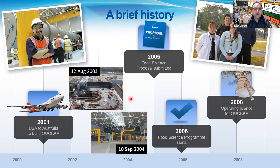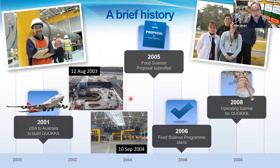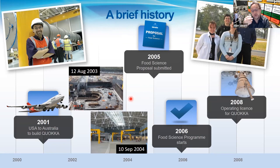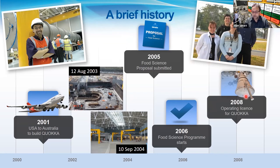One idea was whether we could develop a new community of researchers who hadn't used neutron scattering before — people working in food. Food is the number one manufacturing industry in Australia, and the major components in food are basically polymers and water. Small angle scattering is excellent for studying polymers and neutrons are excellent at studying water and hydrogen, so there's great logic to it. I put the project forward, it was approved, we got some funding, and the operating license for QUOKKA in 2008.